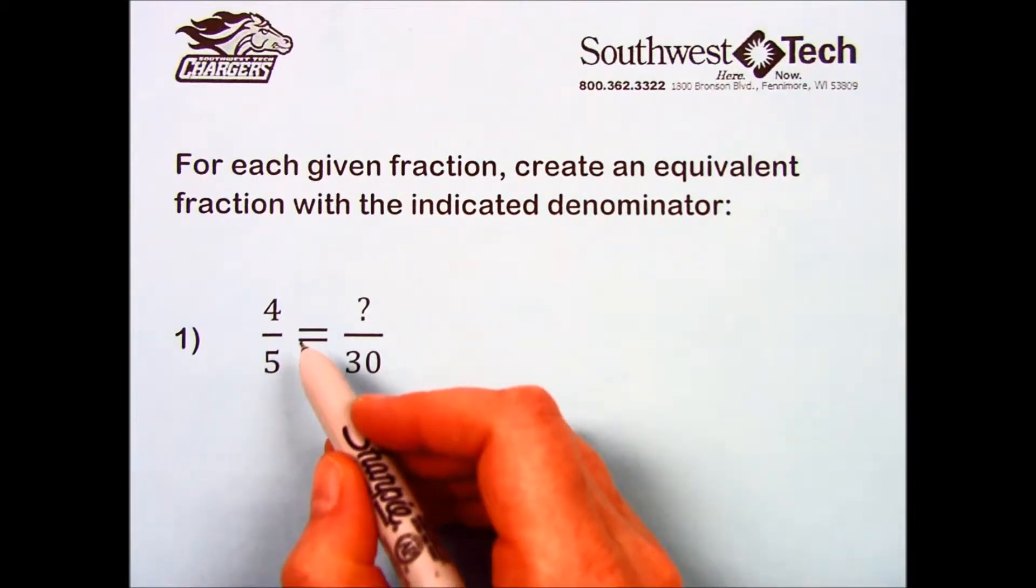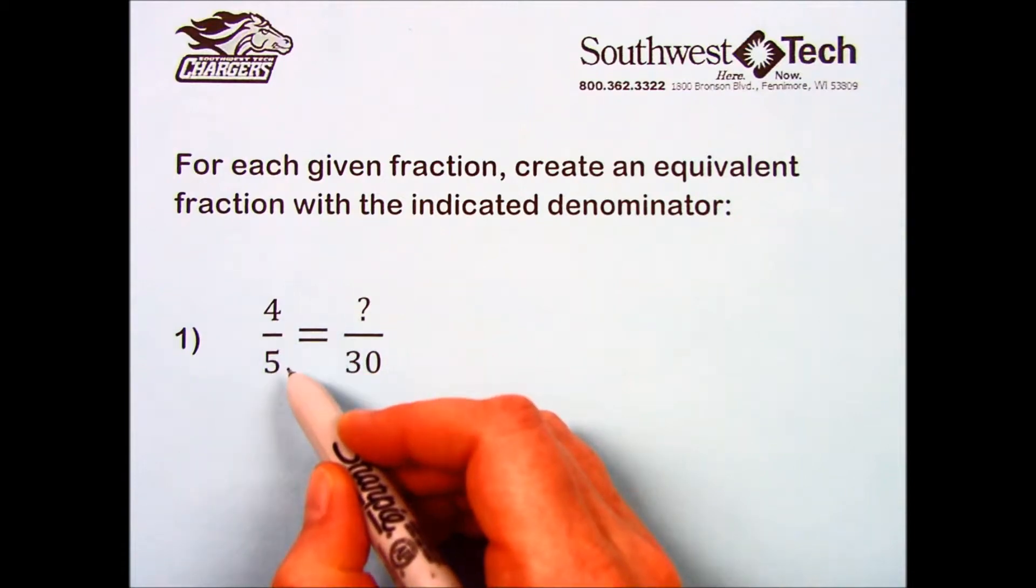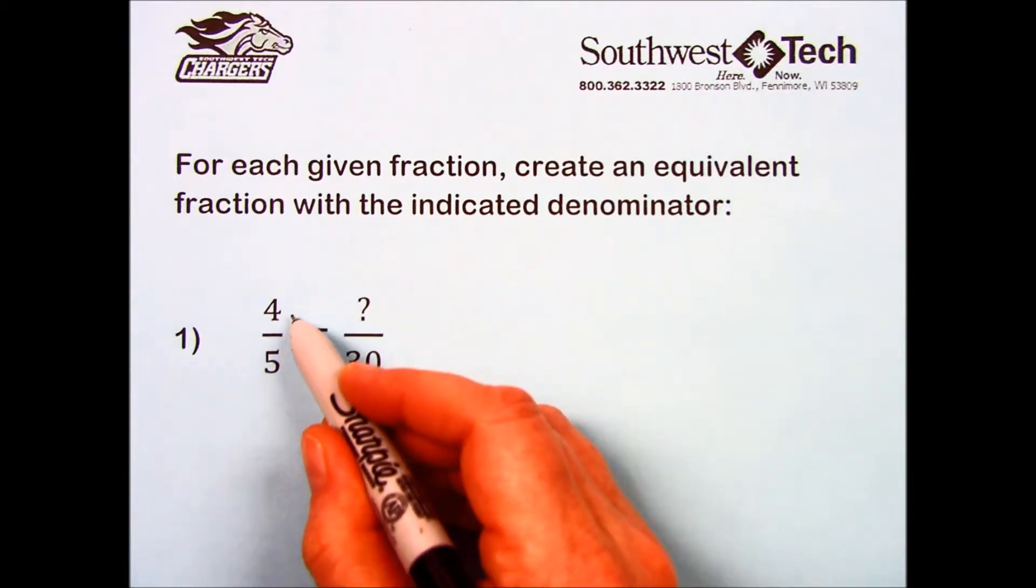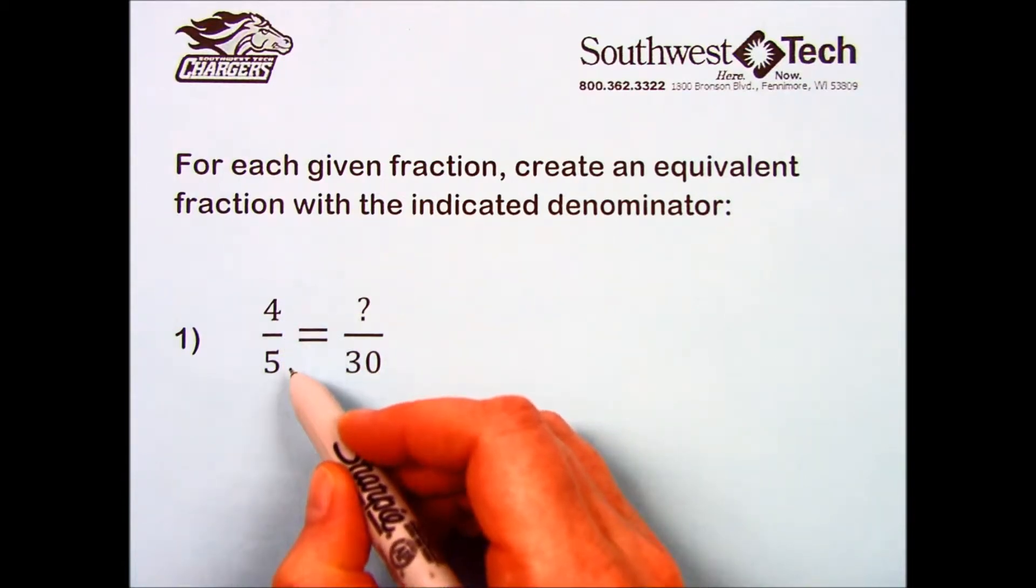Let's try number 1 together. To create a fraction equivalent to this one we're currently working with, we multiply the numerator and the denominator by the same number.